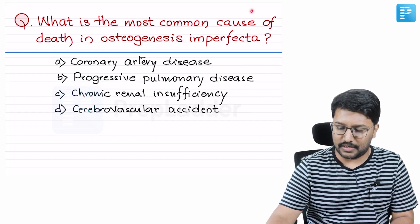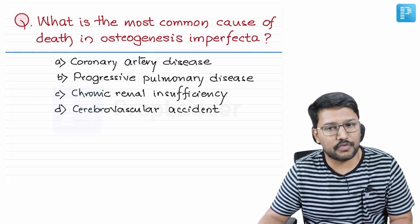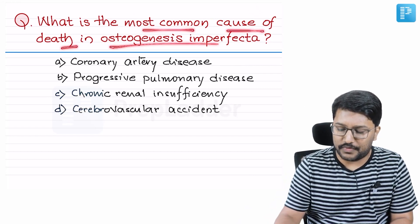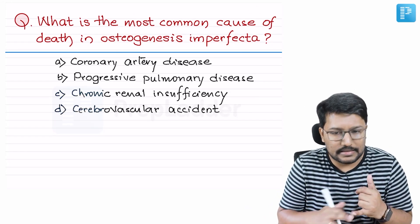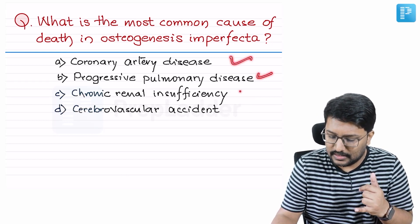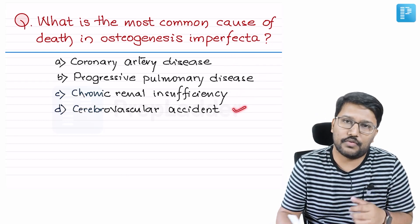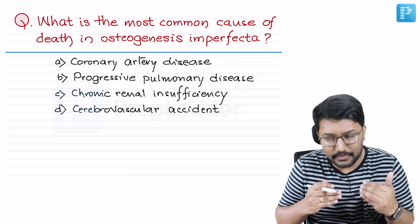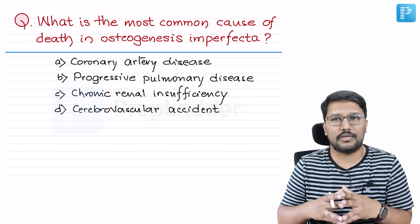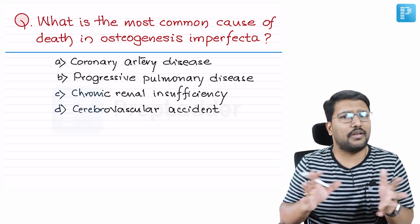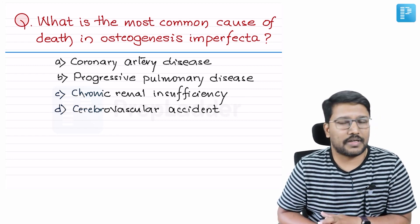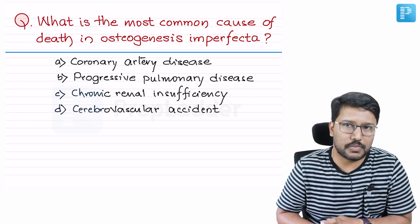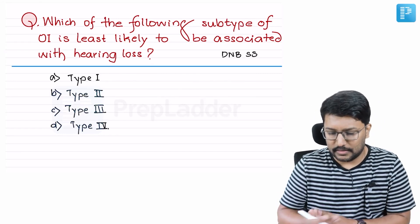Question number two, also related to osteogenesis imperfecta: what is the most common cause of death in osteogenesis imperfecta? The options are coronary artery disease, progressive pulmonary disease, chronic renal insufficiency, or cerebrovascular accident. We know that life expectancy of patients with osteogenesis imperfecta is significantly shortened, so we should know the causes of mortality in those patients.